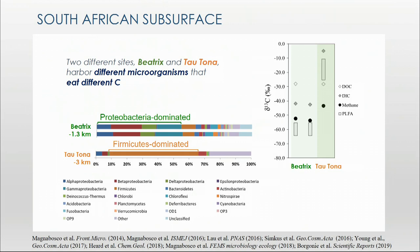What I'm showing here are two different mines, Beatrix and Tautona. Beatrix is a shallower site at 1.3 kilometers underground, with somewhat more oxidizing fluids. Tautona is three kilometers underground and has much more reducing fluids. If we do some 16S analysis, we find that the more oxidizing environment is dominated by proteobacteria, while the reducing environment has far fewer species and is really dominated by Firmicutes organisms.